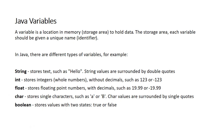A variable is a location in a storage area to hold data. In the storage area, each variable should be given a unique name — an identifier. We store data and hold data in our location. In Java, there are different types of variables.